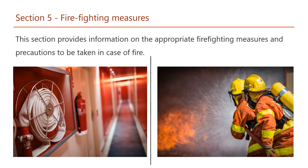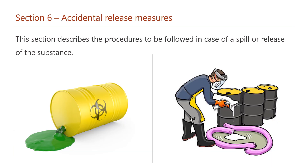Section 5 – Firefighting Measures: This section provides information on the appropriate firefighting measures and precautions to be taken in case of fire. Section 6 – Accidental Release Measures: This section describes the procedures to be followed in case of a spill or release of the substance.